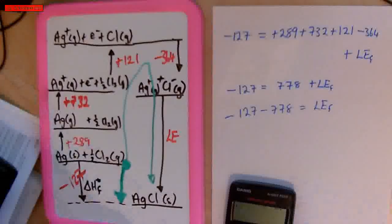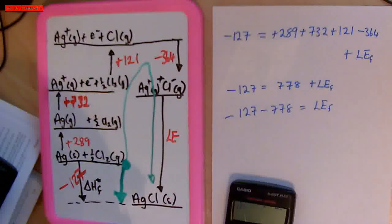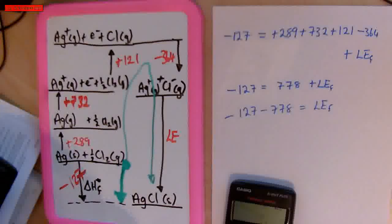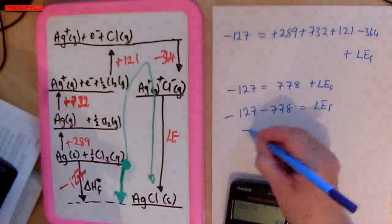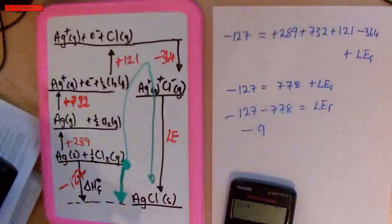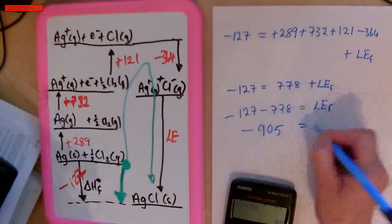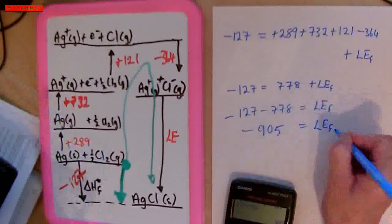So I'm going to do that on my calculator. −127 plus 778 gives a total of 905, so minus 905 is the lattice enthalpy of formation. We know it's the formation because we're going from gaseous ions to solid.